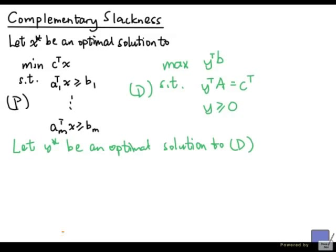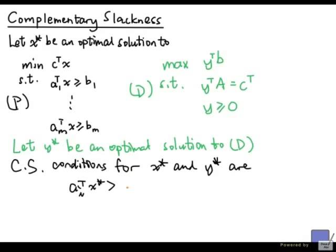So the complementary slackness condition is going to say, complementary slackness condition for x-star and y-star are A i transpose x-star greater than b i implies y i-star equal to 0.